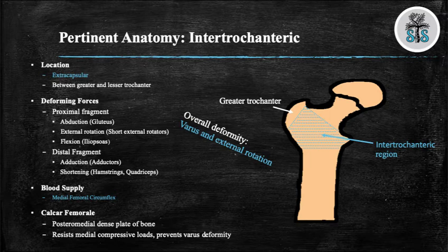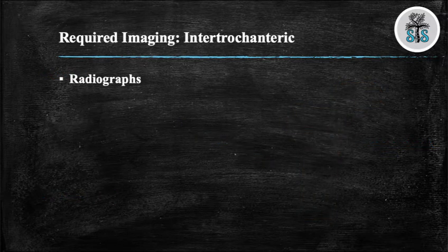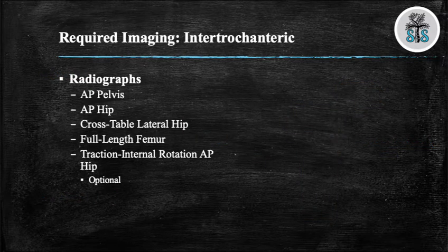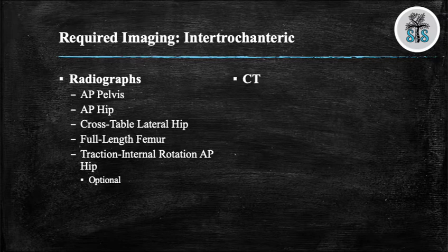When you suspect a hip fracture, you should obtain an AP pelvis, AP hip, cross-table lateral of the hip, and full-length femur. In addition, you can obtain a traction with internal rotation x-ray, though this is optional as it can cause significant pain. If you do this, you'll need to internally rotate the leg approximately 15 degrees while providing traction. You can also obtain a CT scan.